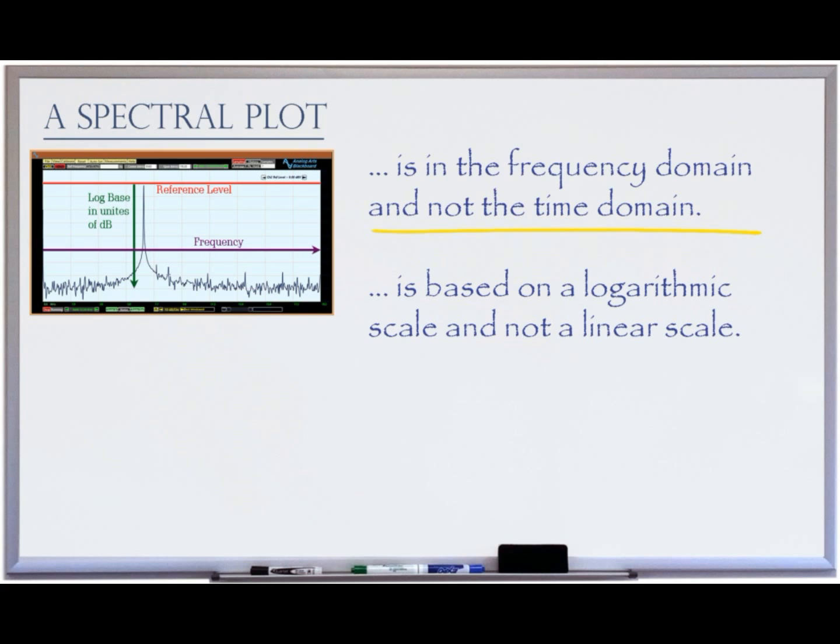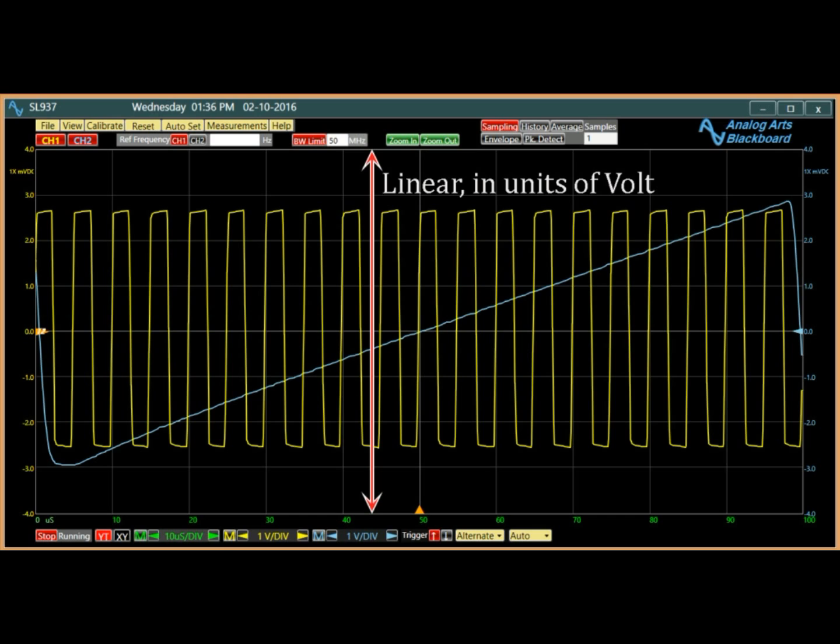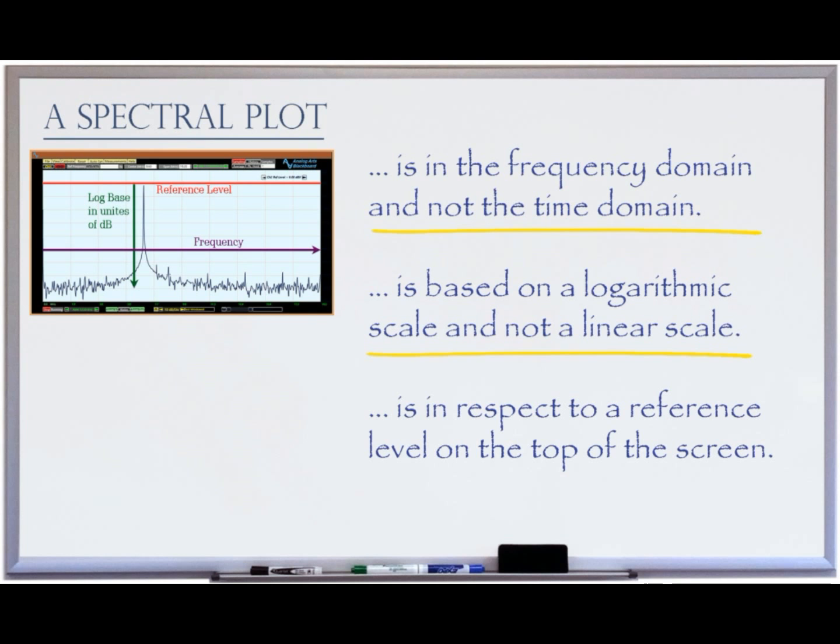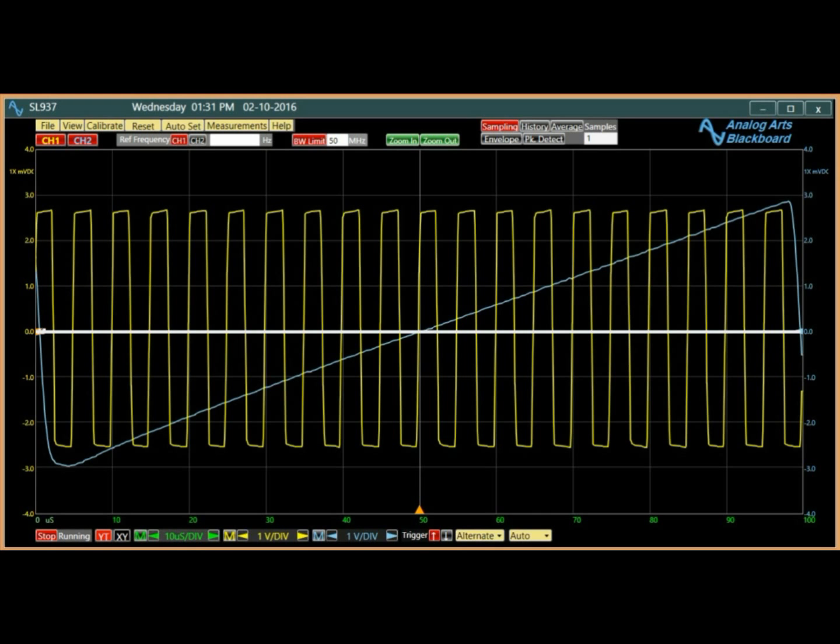It displays the signal's power on a logarithmic scale and not a linear scale like that of an oscilloscope. And the signal is displayed with respect to a chosen reference level on the top of the screen, while oscilloscopes plot signals with respect to the zero level normally set in the middle of the screen.